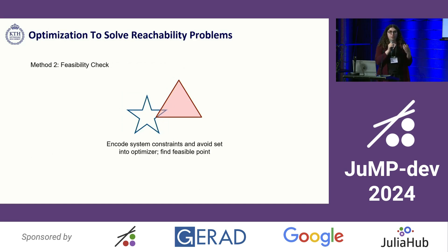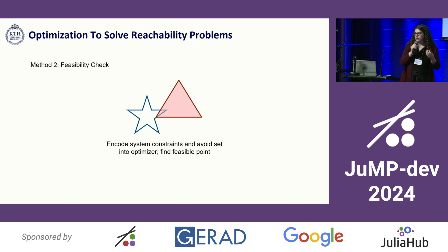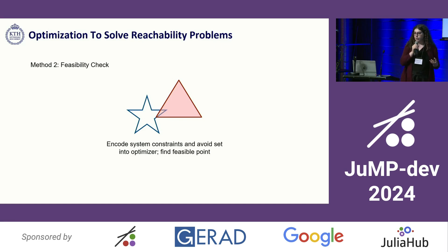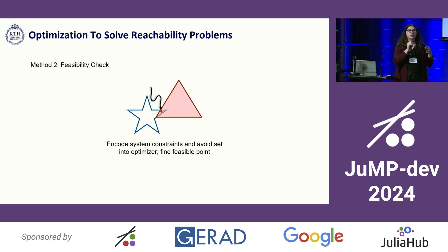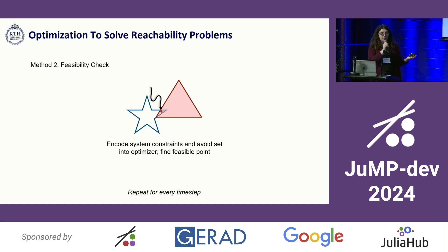The other approach to using optimization to compute reachable sets is what I'll describe as feasibility checking, where we do something quite similar. We encode our system constraints into the optimizer, and now we also explicitly encode the avoid set that we're interested in avoiding into the optimizer, and we ask for feasible solutions. If there exists a feasible solution, then that's our failure point and we've found it. And if there does not exist a feasible solution, then there are no failure points, and that's a win for the controller and our dynamical system. Then again, we repeat this for every time step.